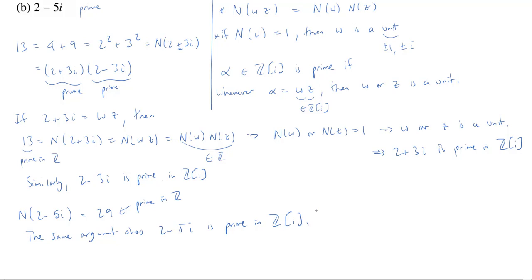From here, we can actually extrapolate a nice result. Theorem: if z is a Gaussian integer and the norm of z is prime in the integers, then z is prime in the Gaussian integers. So that's a pretty helpful result.